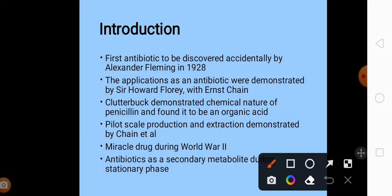Although Fleming discovered penicillin, he did not know the role and function of penicillin. The applications as an antibiotic were demonstrated by Sir Howard Florey with Ernst Chain. Clutterbuck demonstrated the chemical nature of penicillin and found it to be an organic acid. As penicillin gained more importance and popularity as an antibiotic, its demands increased, but in the earlier days large scale production processes were not known. The pilot scale production and extraction was demonstrated by Chain and his colleagues.